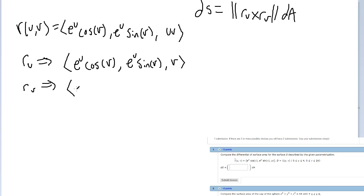So this is just negative u sine v because that's what the partial with respect to v is, e to the u cosine v, and then u. That's our first step.